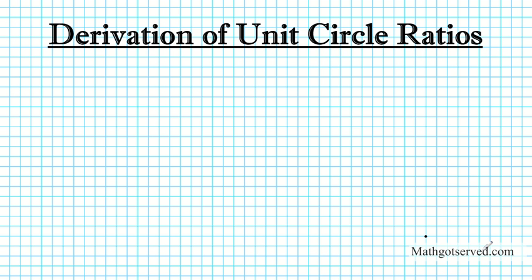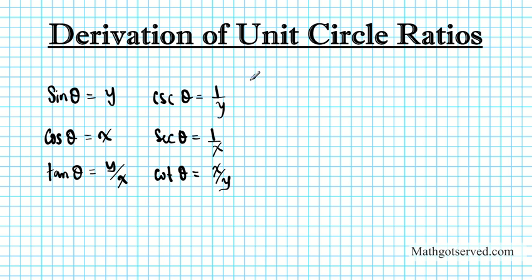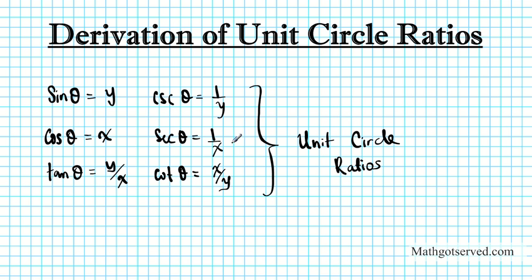Good day students. In this lesson we are going to be going over how to derive the unit circle ratios. You might have come across the following ratios based on the unit circle: sine theta equals y, cosine theta equals x, tan theta equals y over x, cosecant theta equals one over y, secant theta equals one over x, and cotangent theta equals x over y. The question is, where did all these formulas come from? How are they derived from the unit circle? Today I'm going to show you how to derive these formulas.